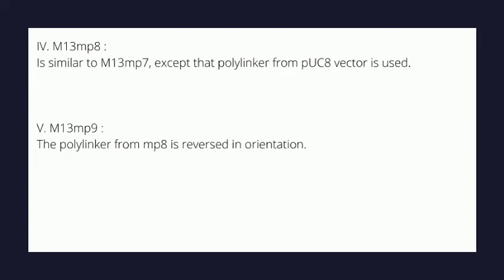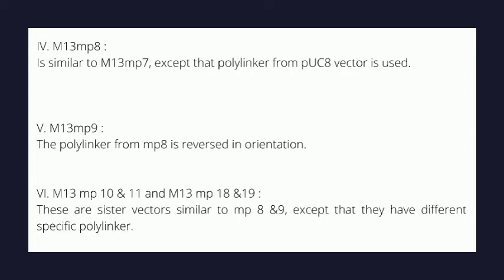Reading the sequence is done from both sides towards a common point in the middle. Likewise, there are many more sister vector pairs in the MP series: mp10 and mp11 are mutually sister vectors, and mp18 and mp19 are another pair. All they have different is a different polylinker in each pair.